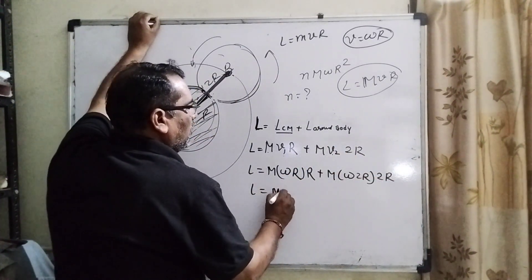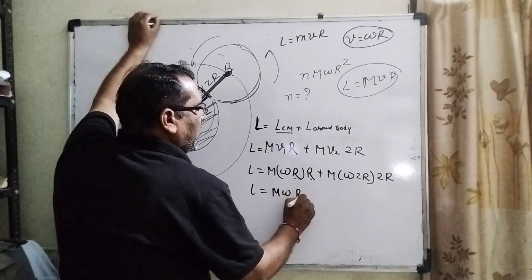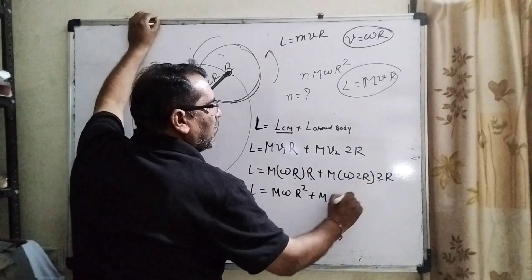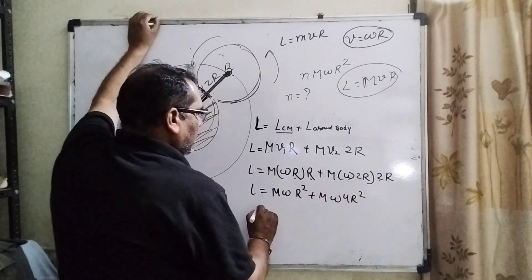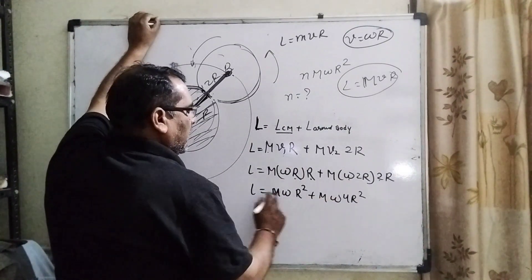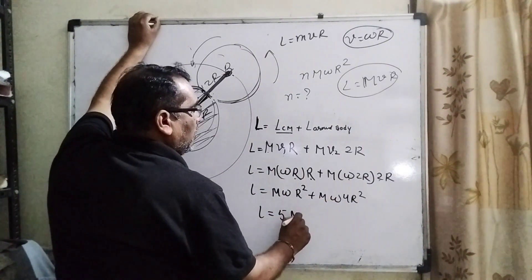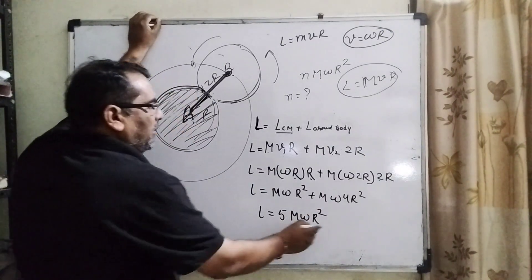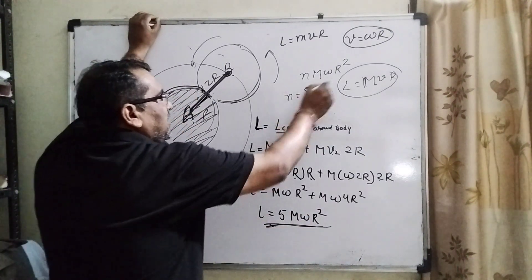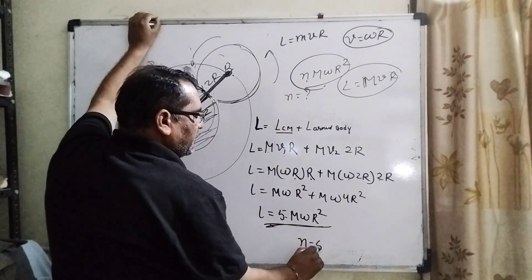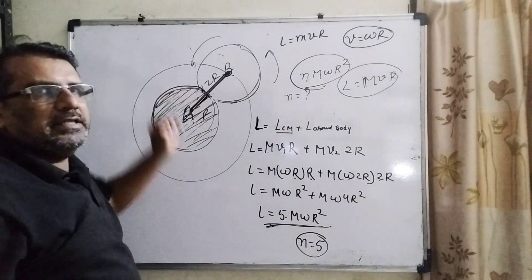L equals M omega R square plus M omega 4 R square. Then L can be written as 5 M omega R square. Now compare with the given terms. So in the place of N it can be written as 5. So the correct answer is 5.